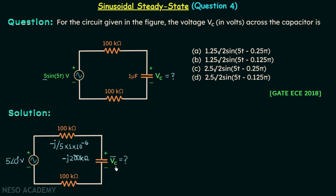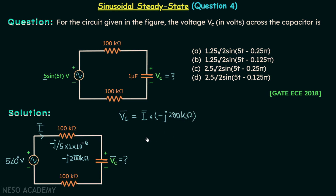We will first find out VC phasor, and once we have VC phasor we can find VC. I will assume that this circuit has a phasor current I phasor. If we can calculate I phasor, we can find VC phasor, because VC phasor equals I phasor multiplied by minus j200 kilo ohms. So we will focus on the calculation of I phasor using KVL in this loop.